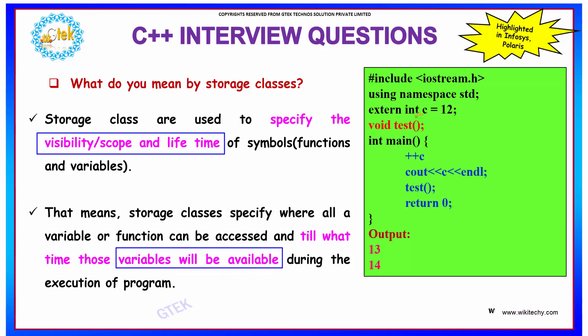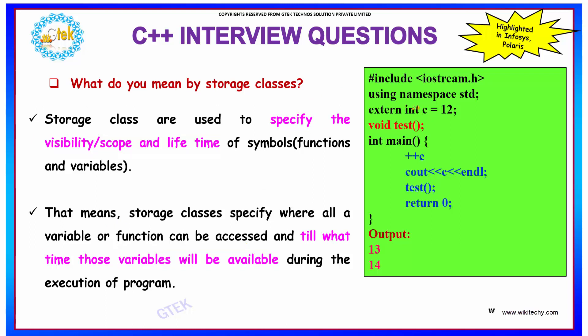If you see over here, we have declared the value of int c equal to 12 and we have specified it with the storage class as external. It means it can be accessed globally throughout the execution of the program. That is what we mean by the access which can be done using extern — that is the storage class extern.